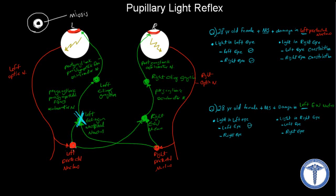What about the right eye? The second signal is going to be sent from the left pre-tectal nucleus, cross over, and go to the right Edinger-Westphal nucleus, then travel all the way through to the right sphincter muscle of the eye, causing constriction. So the right eye is going to constrict.